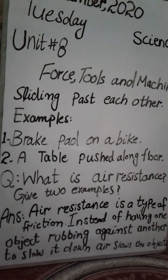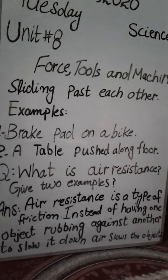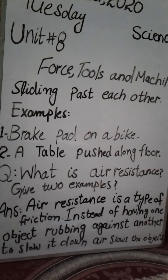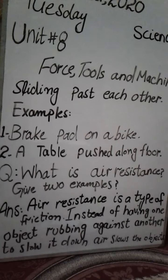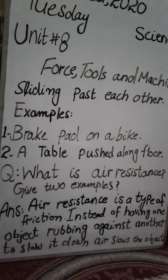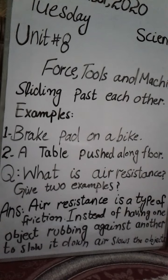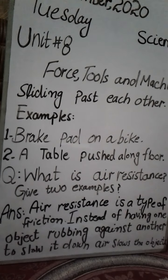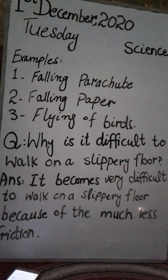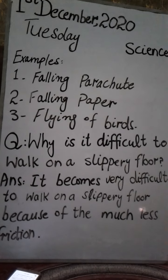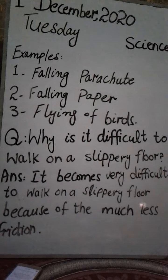The next question is: what is air resistance? Give 2 examples. Air resistance is a type of friction — instead of one object rubbing against another to slow it down, air slows the objects. Examples are: a falling parachute, falling paper, and the flying of birds.